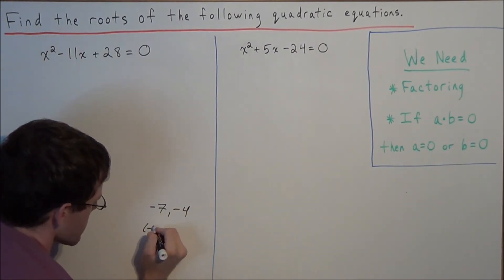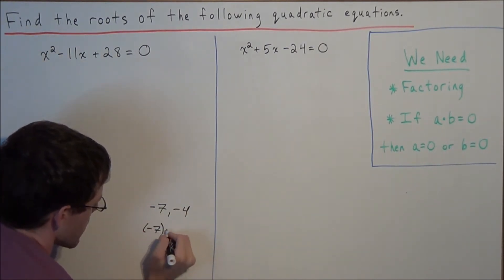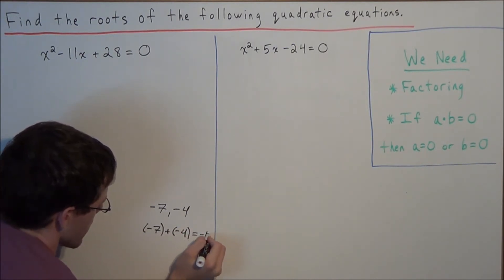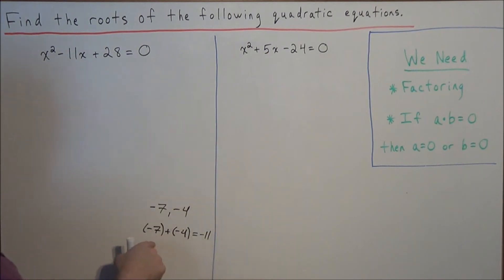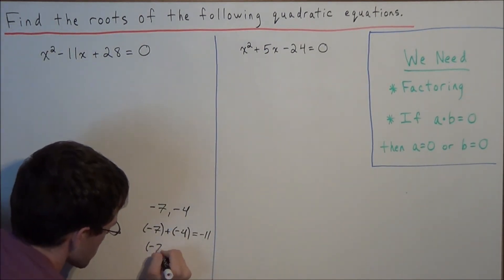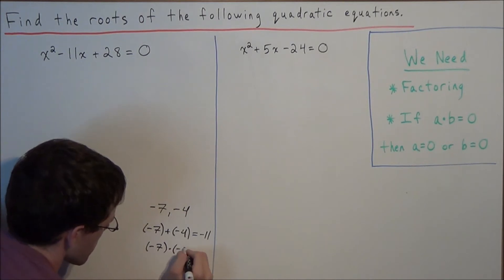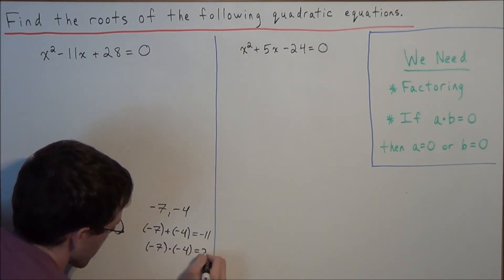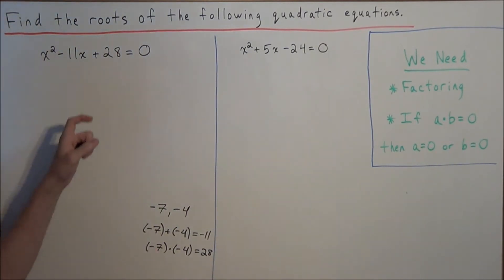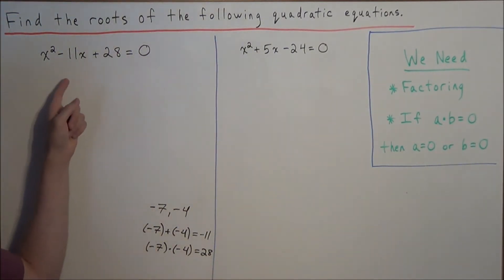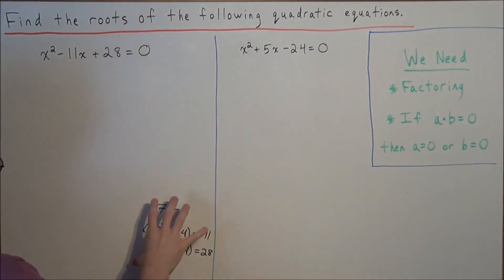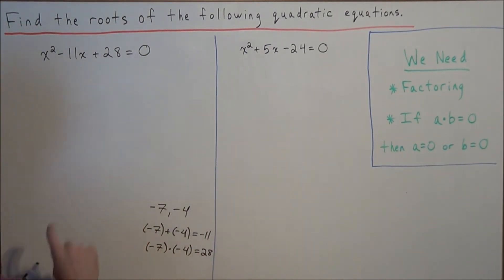And we can even check: negative 7 plus negative 4 is equal to negative 11, so the sum of these two numbers equals negative 11. And the product, negative 7 times negative 4, is equal to a positive 28, which matches the last term. For more details on how to factor quadratic expressions, you'll want to watch this video here. But now we're going to assume that we know how to factor and move forward.